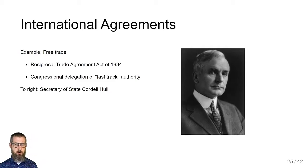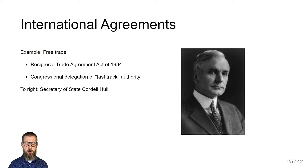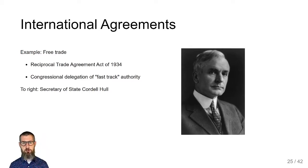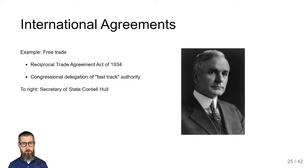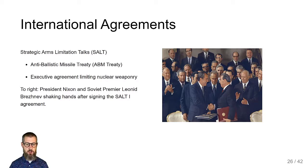An example of an executive agreement is the Reciprocal Trade Agreements Act of 1934. Congress formally controlled tariff-setting power but delegated authority to the executive to negotiate tariff reductions in exchange for like reductions from other countries, limiting itself to an up-or-down vote to streamline the process. This reflects the changing interests of U.S. manufacturers and both parties during the 1930s and especially after World War Two, when the international economic landscape changed dramatically.